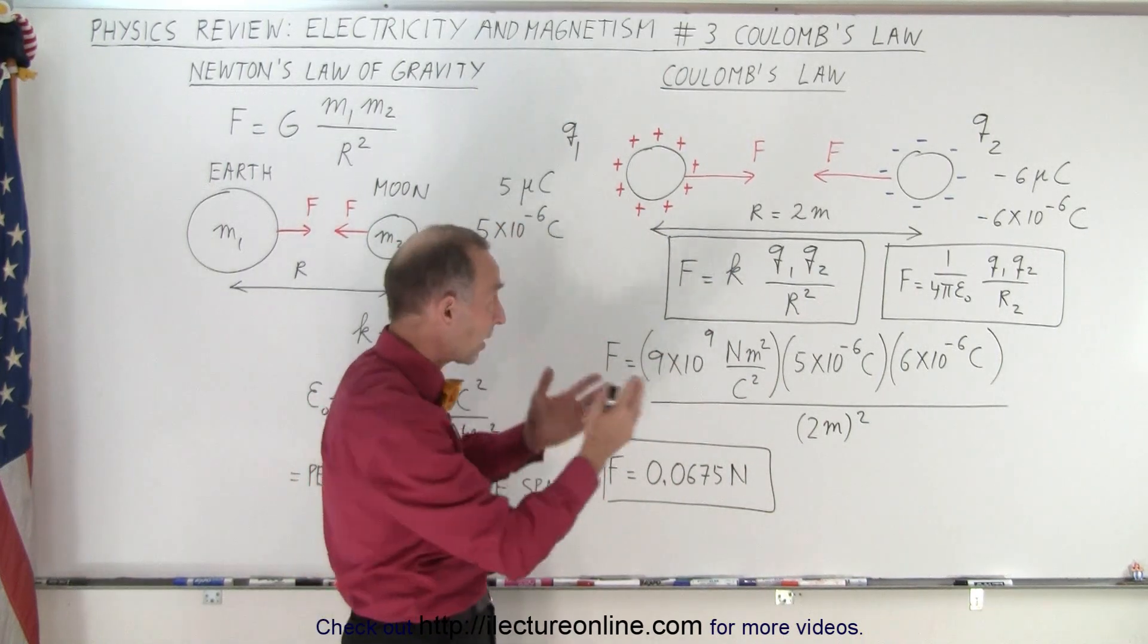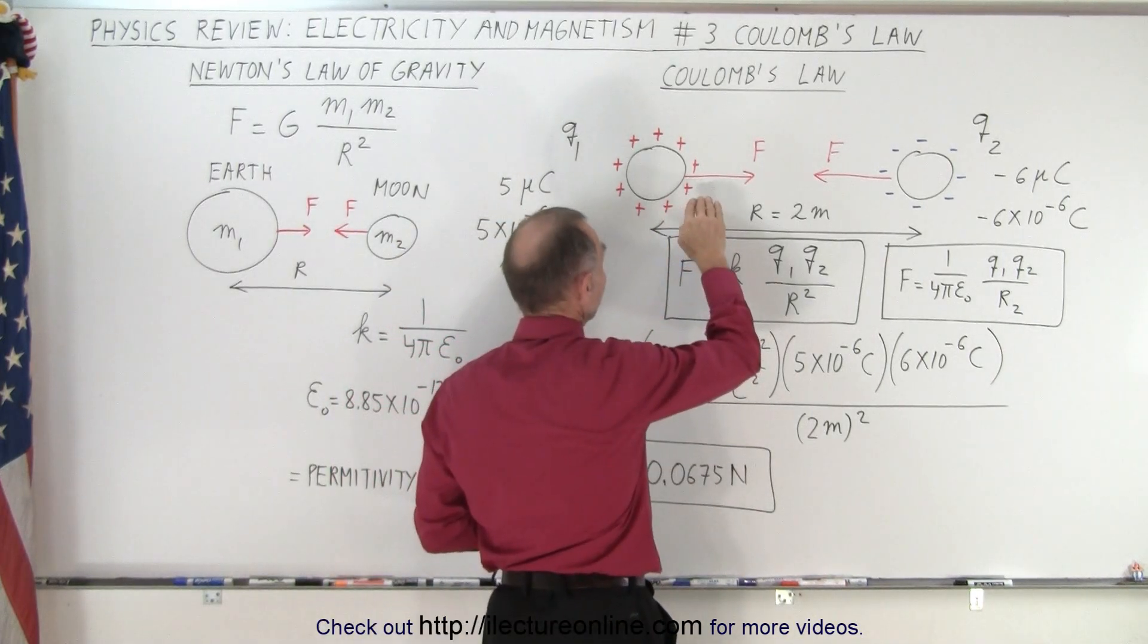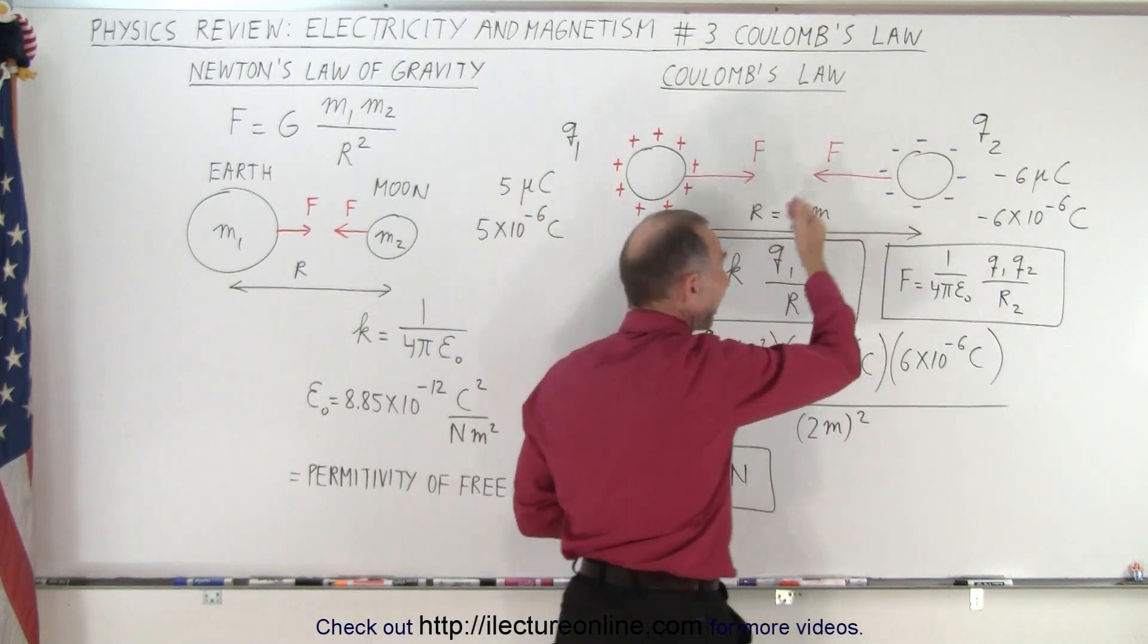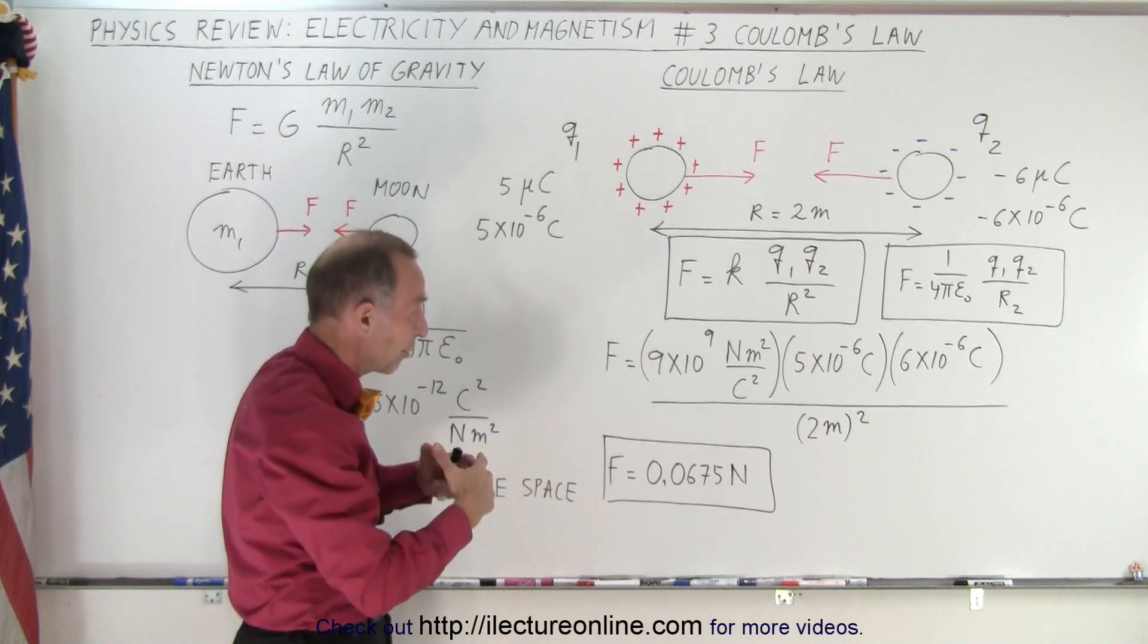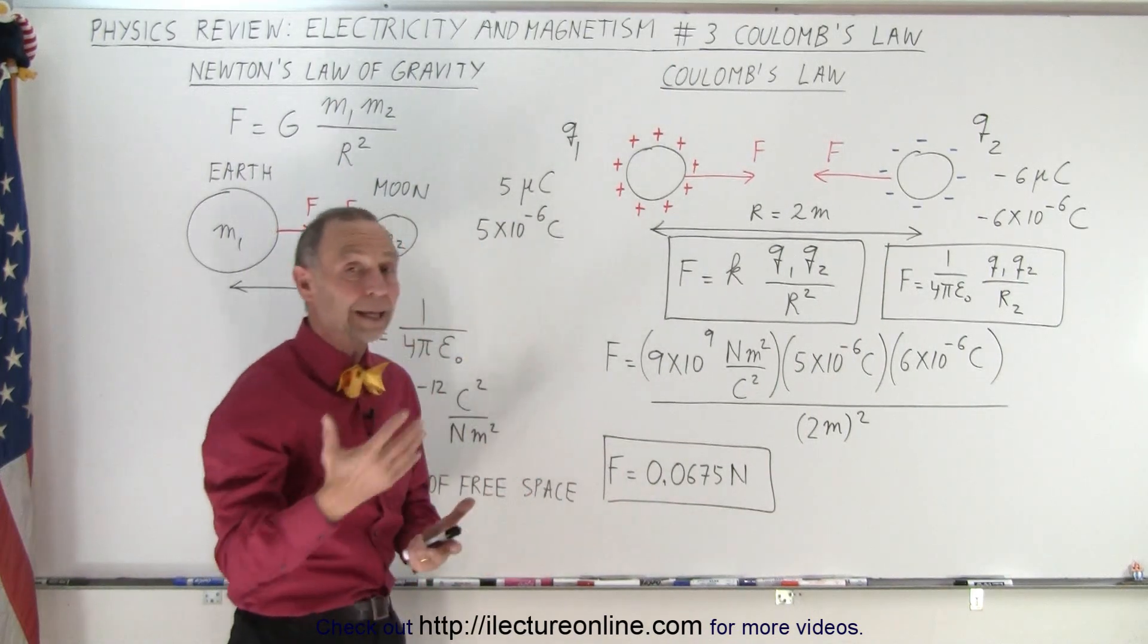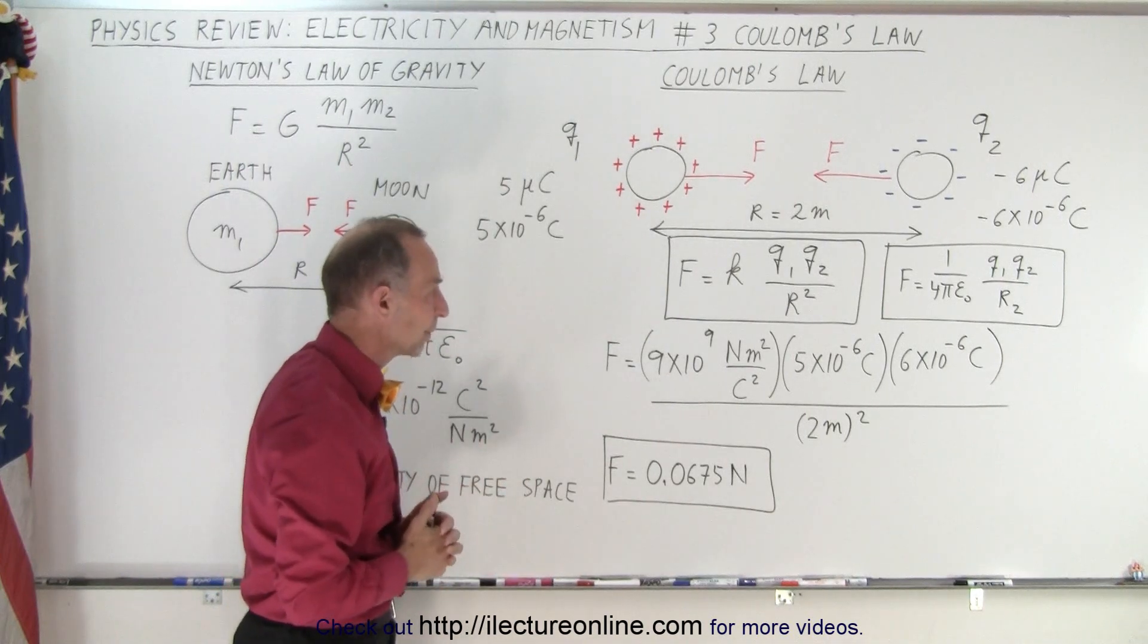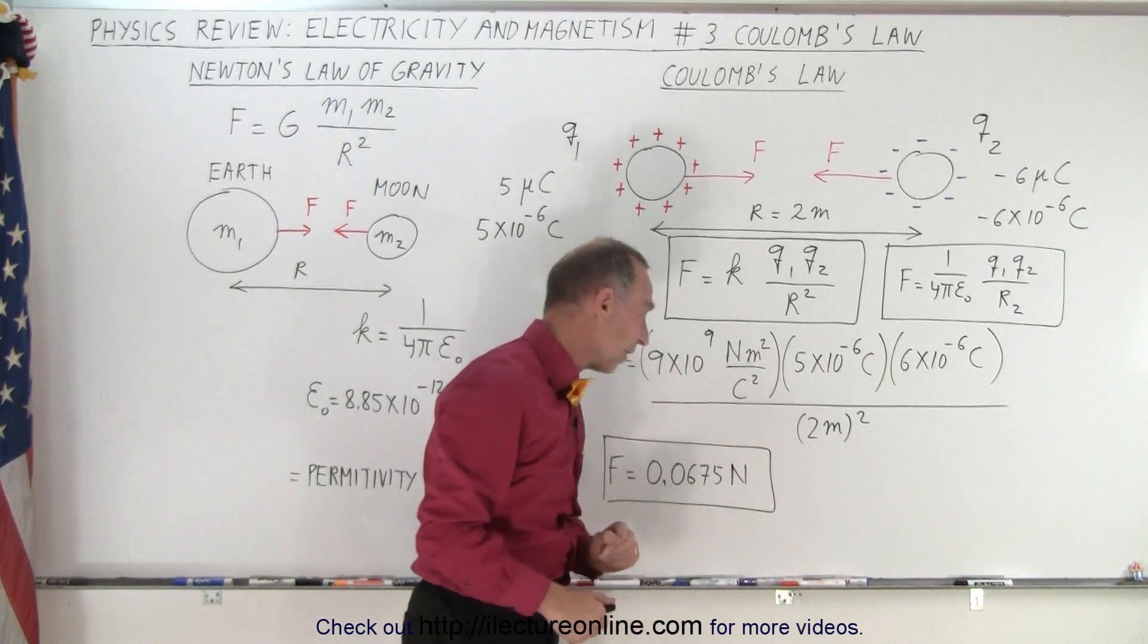The direction depends upon which charge we're talking about, because notice, if we talk about the force on the left charge is to the right, and the force on the right charge is to the left. So it doesn't really matter if we put negative positive down, we simply find the magnitude, and then later on we can determine the direction if we want to put it into a vector format. The distance, 2 meters, we square that, and then we come up with this value right here.